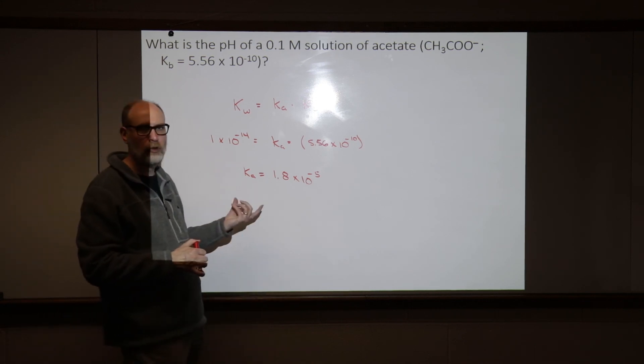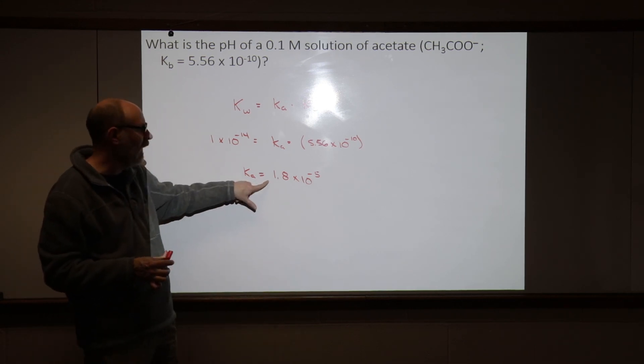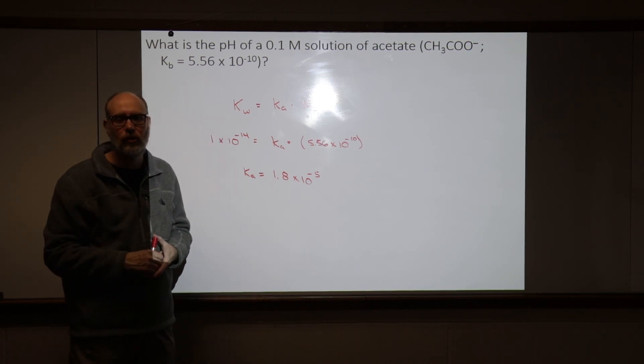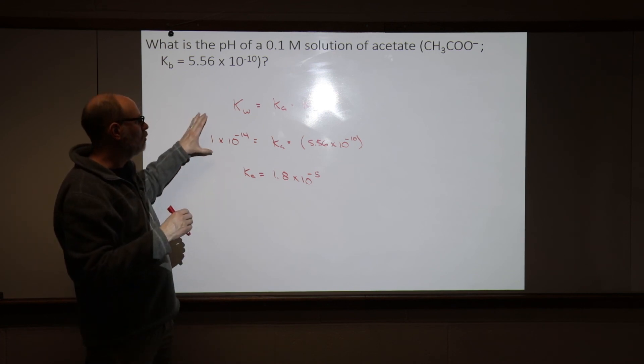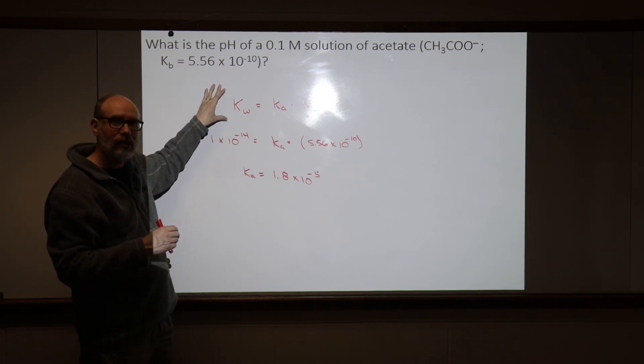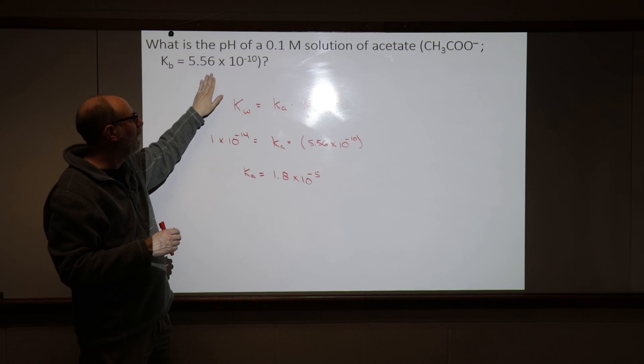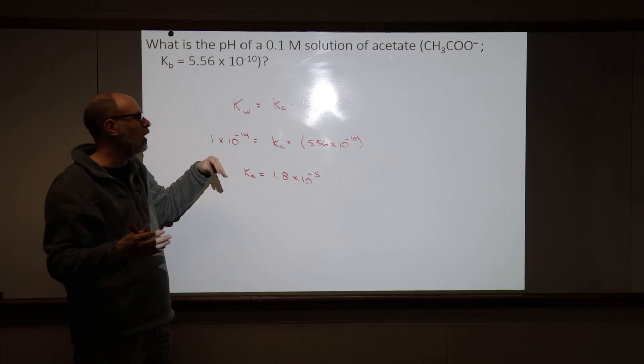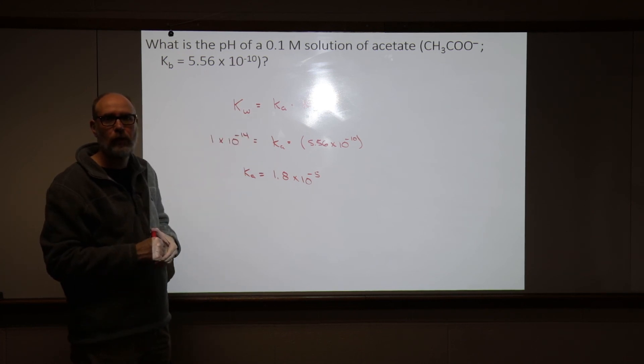times 10 to the minus 5th. But it's really, really close to the Ka that we used when we solved the pH of the acetic acid solution. So, just remember this in case you end up in a situation where it's like, okay, this is a base. I need the KB. How do I figure out what it is? We have to use this expression, okay?